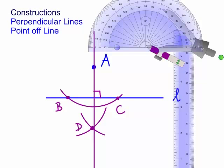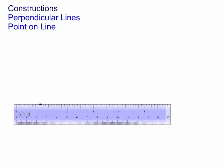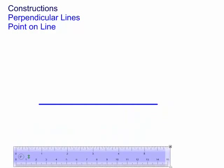All right. So let's actually now move on to the second case. We're now going to construct a perpendicular line to another line where the point is actually on the line. So let's actually draw a line and put the point on it.